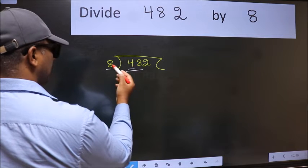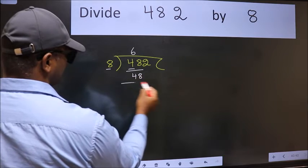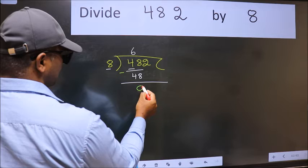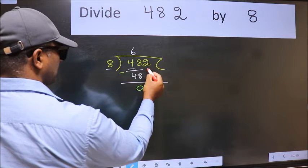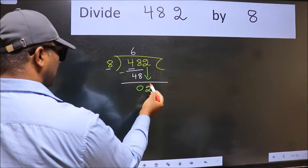When do we get 48 in the 8 table? 8 times 6 is 48. Now we should subtract. We get 0. After this, bring down the beside number, so 2 down. After this step,